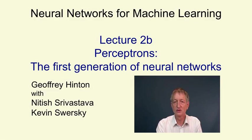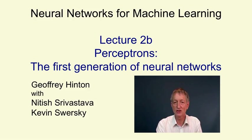In this video, I'm going to talk about perceptrons. These were investigated in the early 1960s, and initially they looked very promising as learning devices, but then they fell into disfavour because Minsky and Papert showed they were rather restricted in what they could learn to do.